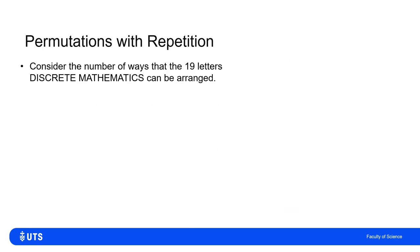So let's make this much harder. We've got 19 letters in the phrase discrete mathematics. So there are 19 factorial ways that I can arrange all 19 letters. But that doesn't account for repeated letters.